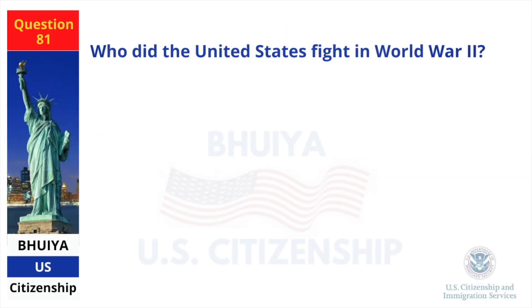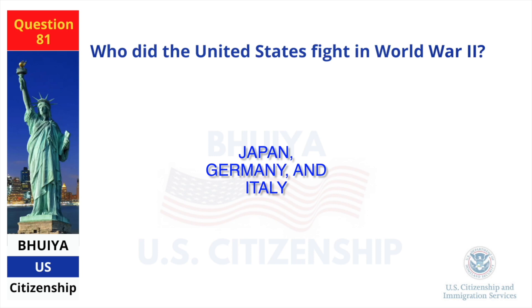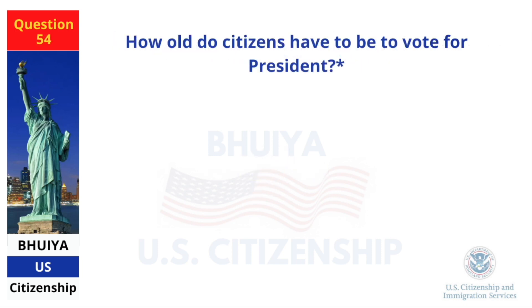Who did the United States fight in World War II? Japan, Germany, and Italy. How old do citizens have to be to vote for President? 18 and older.